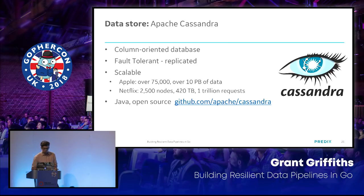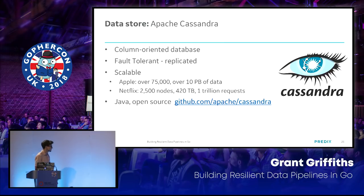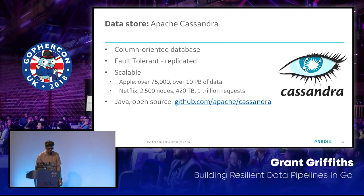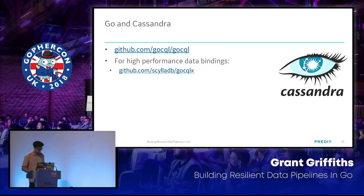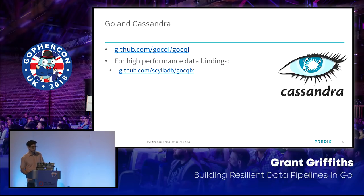Cassandra with Go is a lot more straightforward. There's GoCQL, which is the officially supported library — just go get it. And then there's GoCQLX on top of that for high-performance data bindings. Cassandra is a fault-tolerant replicated column data store that's very scalable. Apple has over 75,000 nodes with 10 petabytes of data, and Netflix has 2,500 nodes with 420 terabytes. If you need a scalable database, Cassandra is definitely a good pick.